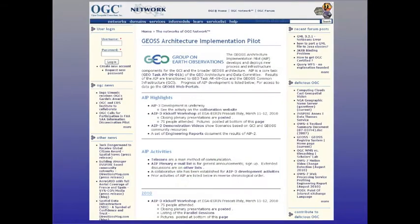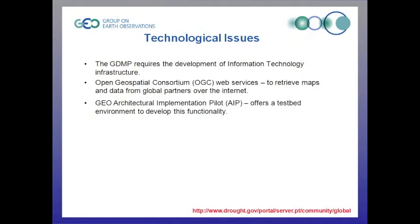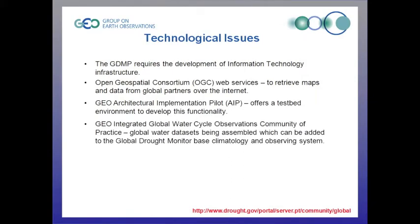Open Geospatial Consortium web services, like Web Map Services, will retrieve maps and data over the internet. The GEO Architectural Implementation Pilot offers a testbed environment to develop this function, and the global water datasets being assembled by GEO's Integrated Global Water Cycle Observations community of practice can be added to the Global Drought Monitor.